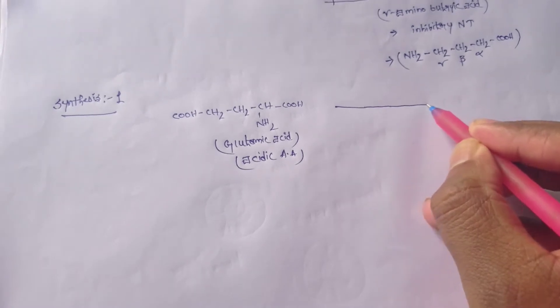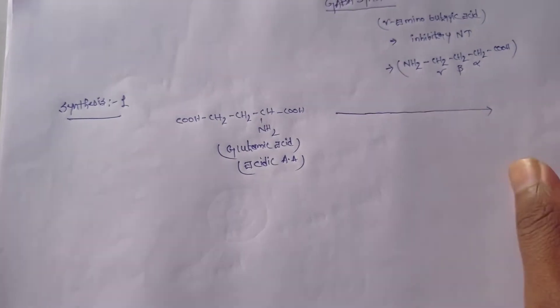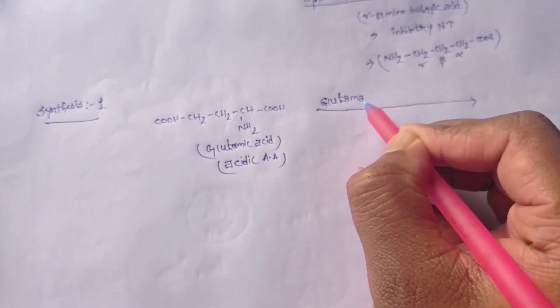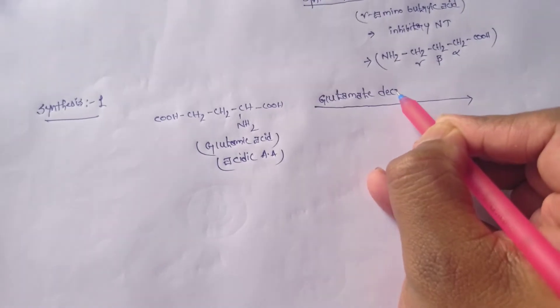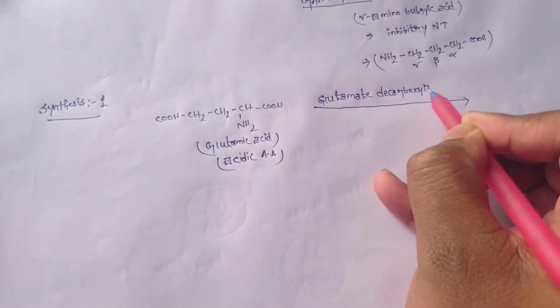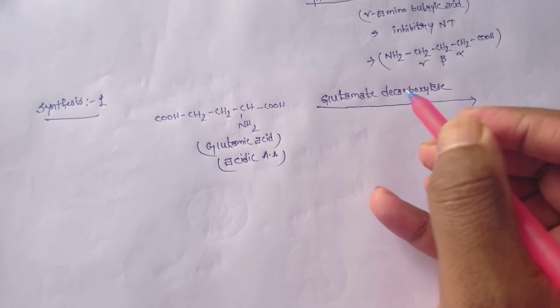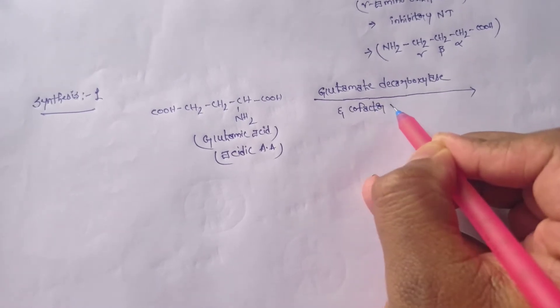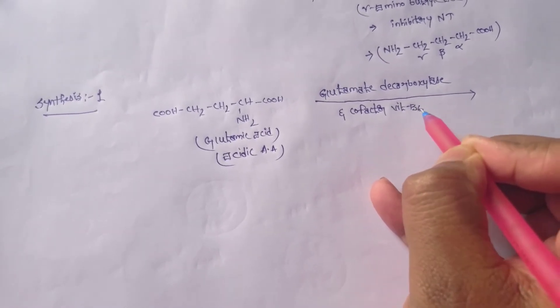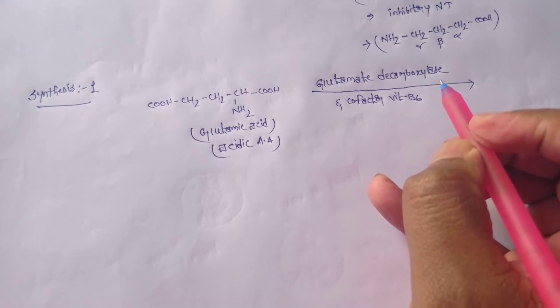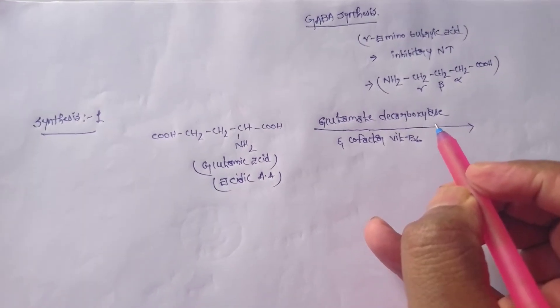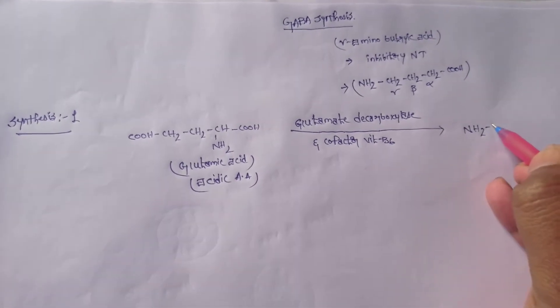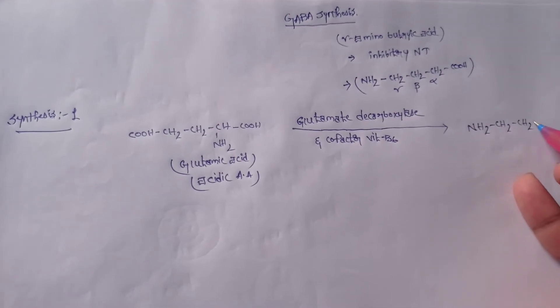In the presence of glutamate decarboxylase and cofactor vitamin B6 pyridoxyl phosphate, which are involved in decarboxylation reaction, this results in the formation of GABA.